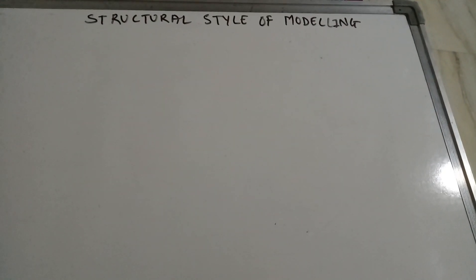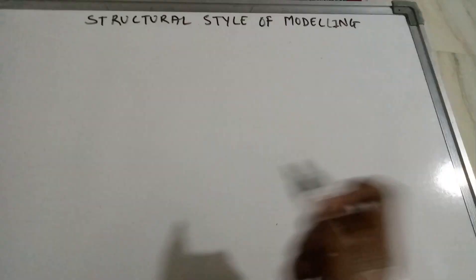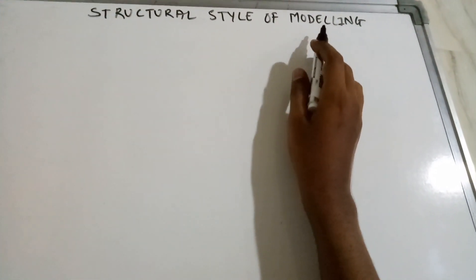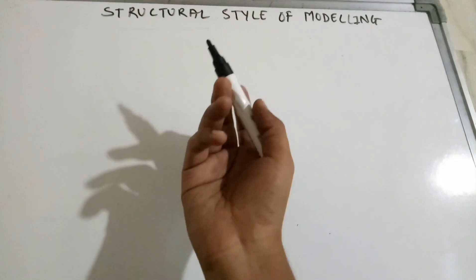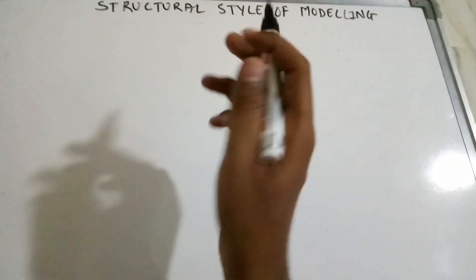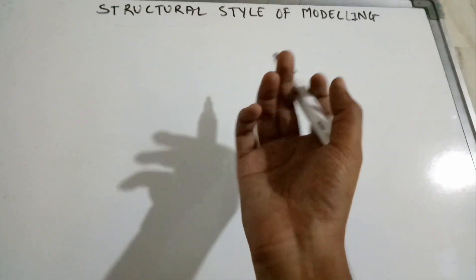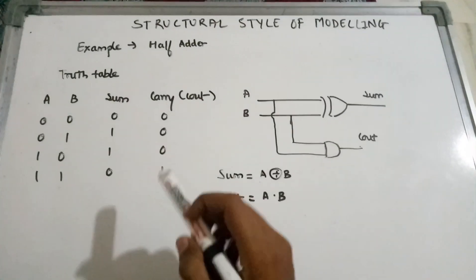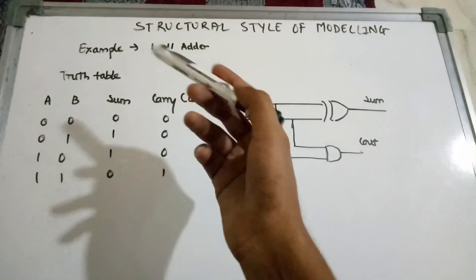Hello and welcome to this video. Today the topic of the video is structural style of modeling. Structural modeling of an entity is described as a set of interconnected components. We will see this by an example — the example shown is of a half adder.